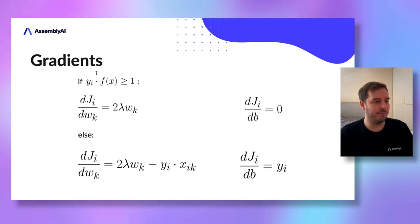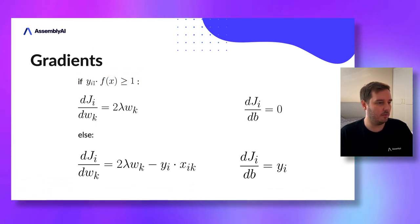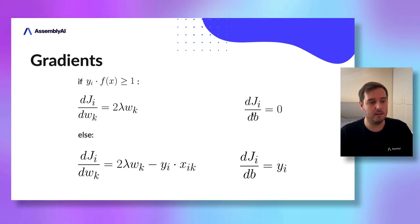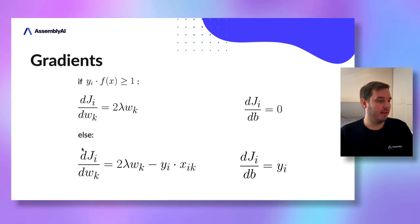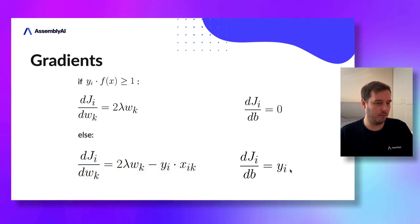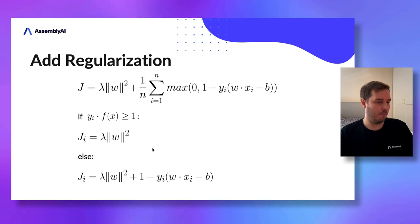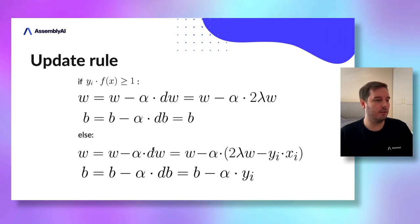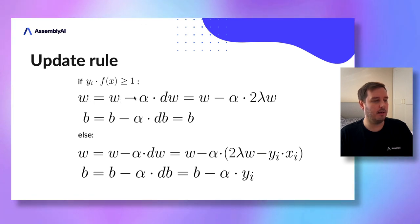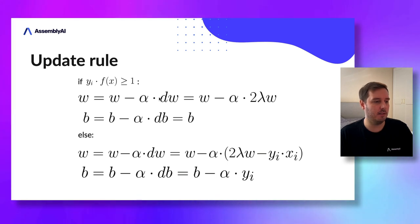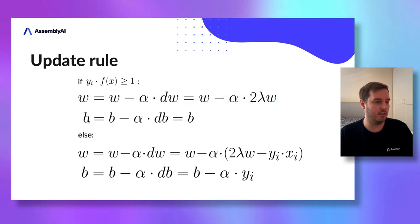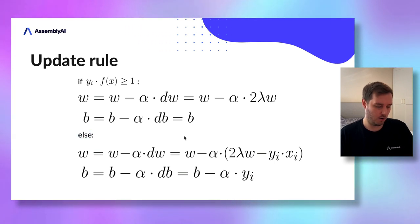We calculate the derivative of the cost function with respect to w and b. If we are on the correct side of the decision boundary, the gradient with respect to w is 2 times lambda times w, and the gradient with respect to b is zero. Otherwise, the gradient with respect to w includes the hinge loss term, and we also update b. Please double-check the math for yourself. We then apply the standard gradient descent update rules: w minus equals learning rate times gradient.